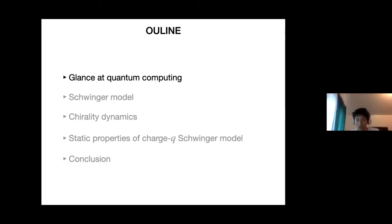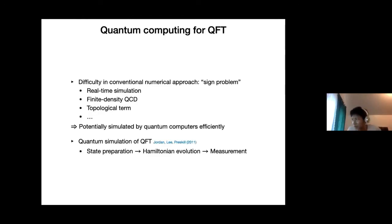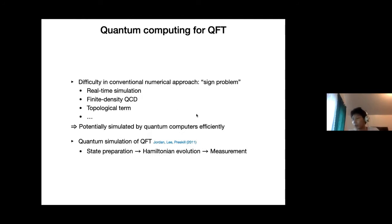Before getting into physics, I want to set some terminologies. The primary reason we want to use quantum computing to approach quantum field theory is because of difficulties in conventional numerical approaches—that is the sign problem for Monte Carlo simulation. Because of this problem, you cannot properly do Monte Carlo simulation due to the sign oscillation in the path integral. This shows up in real-time simulation, finite density QCD, and theories including topological terms.